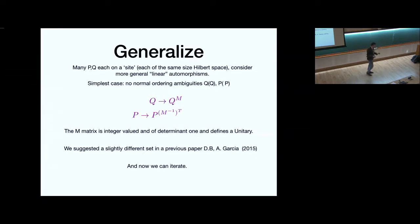So the idea is to generalize. So you take many P's, many Q's, one P and one Q per site. And then you want to basically consider more general linear automorphisms, the logs of Q and logs of P, and basically build a big matrix rather than just a two by two matrix. And then to avoid normal ordering ambiguities, you want to make Q a function of Q and P a function of P. And consistency tells you that you usually represent these by a matrix M. And then in P, you get the inverse transpose. That's the condition for this thing to be an automorphism. And the matrix M is integer valued and of determinant one and defines, in principle, a unitary in this bigger system.